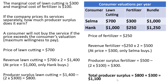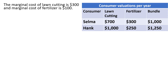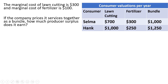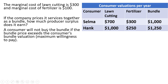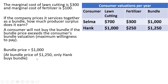Now let's look at the bundle pricing strategy. Same marginal cost. If the company prices its services together as a bundle, how much producer surplus does it earn? A consumer will not buy the bundle if the bundle price exceeds the consumer's bundle valuation. The optimal bundle price here is going to be $1,000. At $1,000, Selma will buy the bundle, and Hank will buy the bundle — Hank is willing to pay $1,250, so $1,000 gives him a little bit of consumer surplus. At a bundle price of $1,250, only Hank would buy the bundle and the revenue would be less.